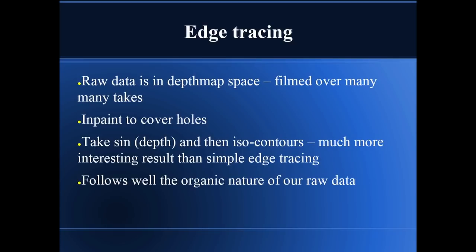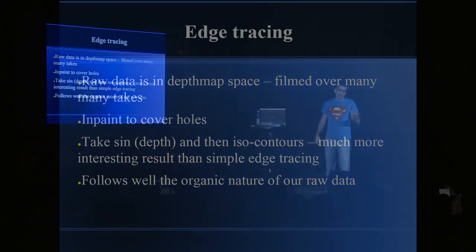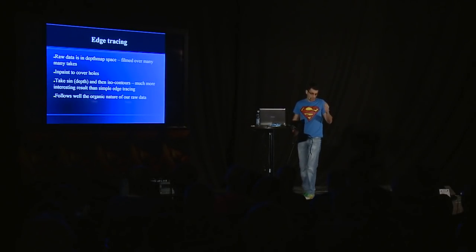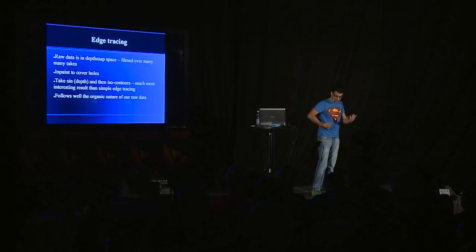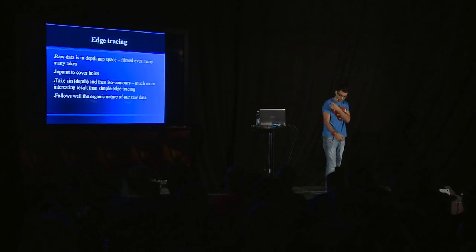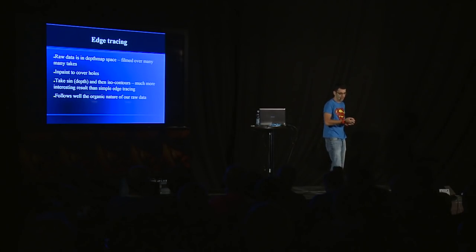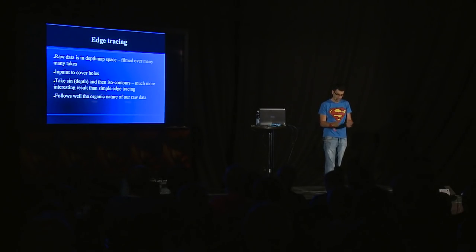The raw data is a depth map — a 16-bit depth map that gives you information on how far away something is. I had to develop an algorithm to do in-painting because you get a lot of holes with these Z-buffer images. The holes come from the way the IR camera and IR projector work — there's a distance between them, so there's a natural shadow. I made a program that covers these holes with what would have been there if it wasn't empty space.